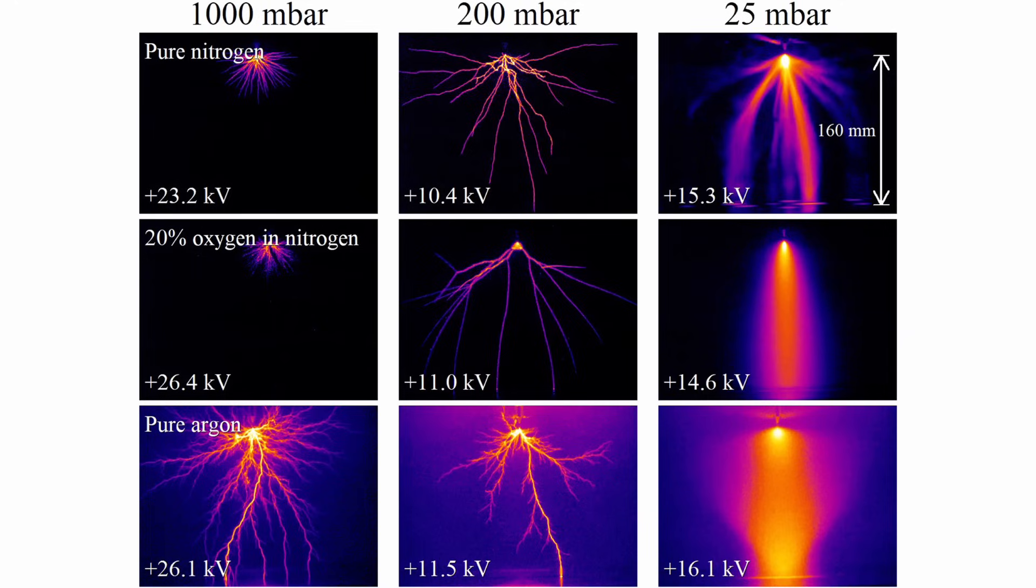In laboratory settings, the leaders are generated when a network of streamers emitted from a small region near a metal electrode achieves a sufficiently high aggregate current density.